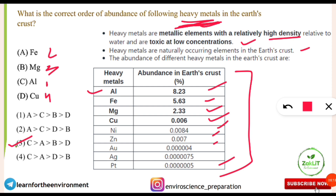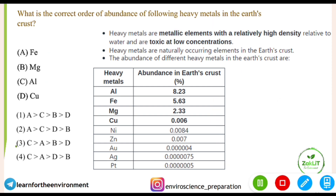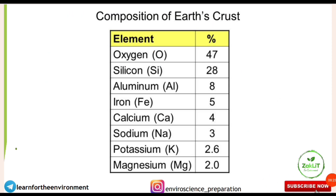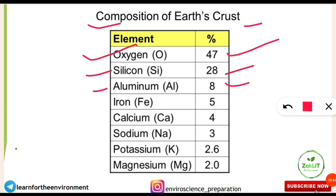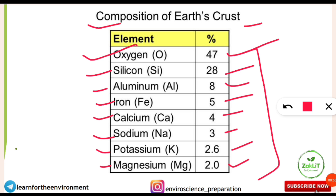The overall elemental composition of the Earth's crust is also a very frequently asked topic. Note down: oxygen is maximum at 47%, silicon at 28%, aluminium at 8%, iron at 5%, calcium at 4%, sodium at 3%, potassium at 2.6%, and magnesium at 2%. Questions are asked either directly, in increasing or decreasing order, or as match-the-following, so note this table very carefully.